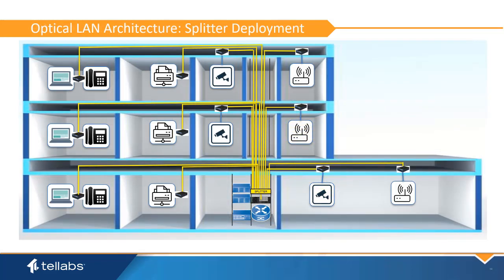Splitters can be deployed in two ways: home run and distributed. The home run design model locates optical splitters in the main data center or the main distribution frame. Here, fiber is run from each ONT all the way back to the data center and MDF. This method can lower maintenance costs with all equipment co-located in the data center and is also easier to migrate to future technologies. However, higher initial costs and tougher initial fiber management across a facility could be a detraction.